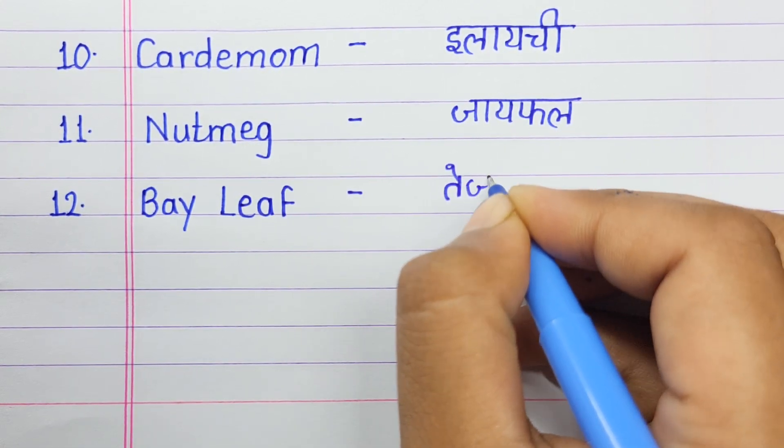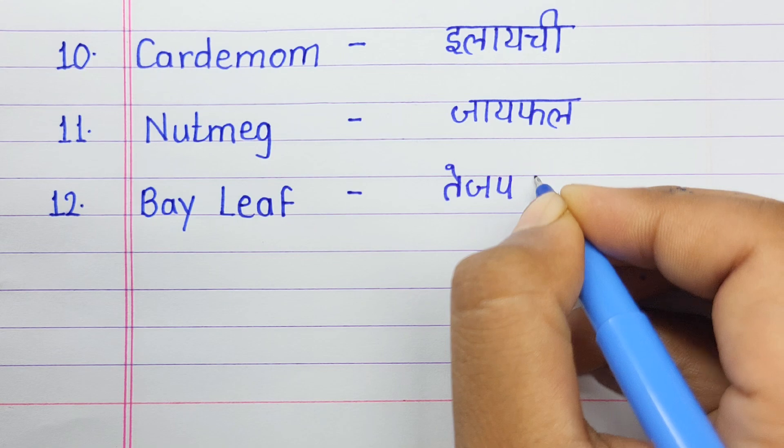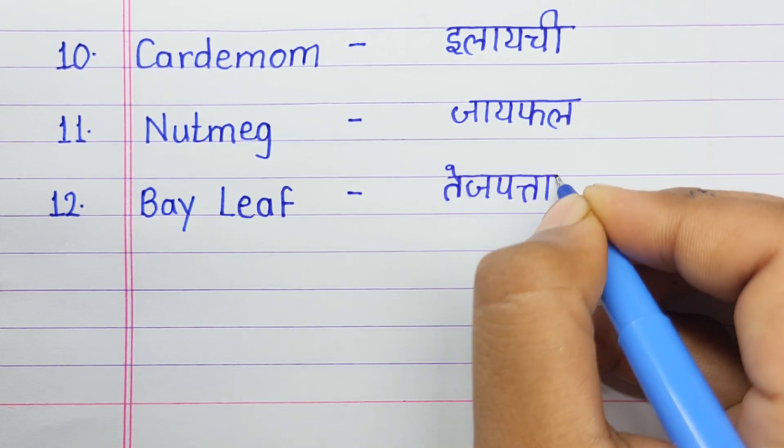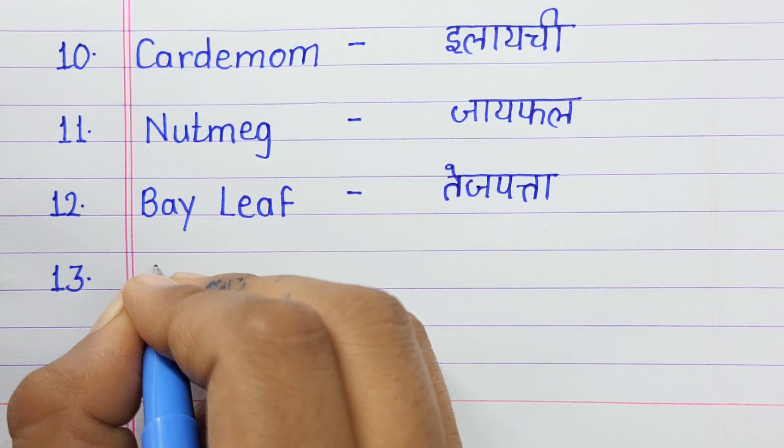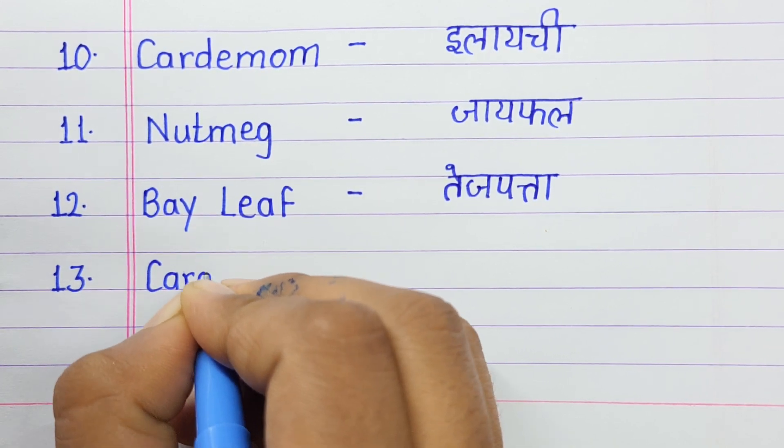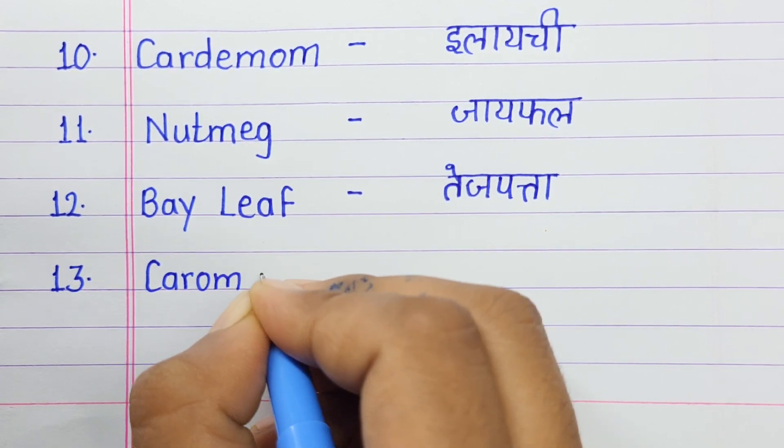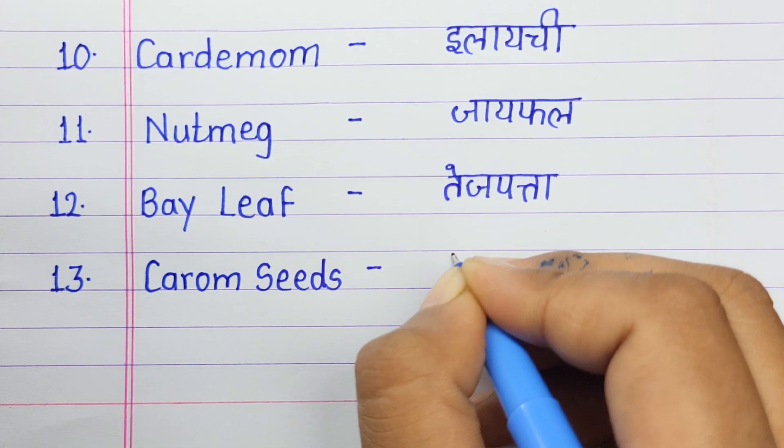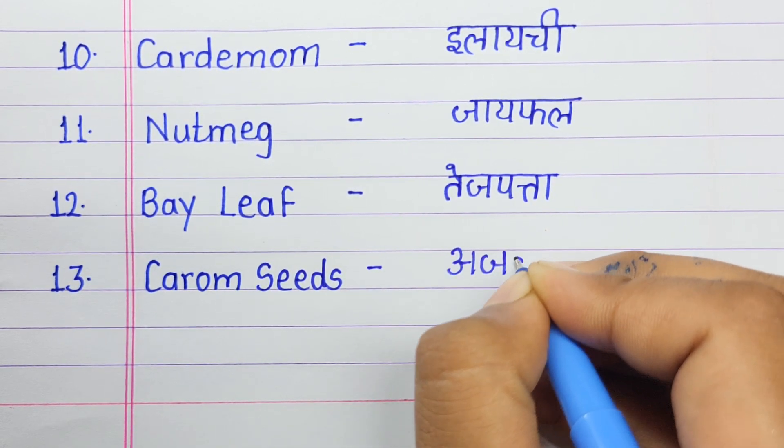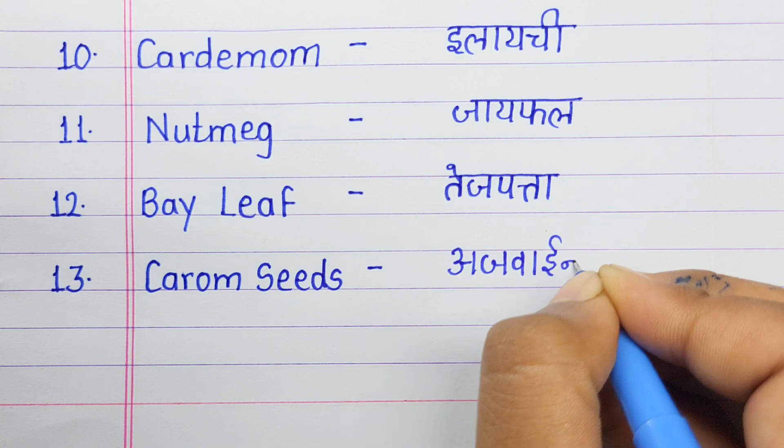Number twelve: Bay leaf means tej patta. Number thirteen: Carom seeds means ajwain.